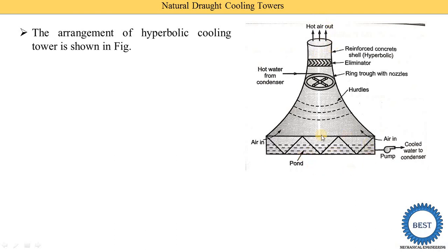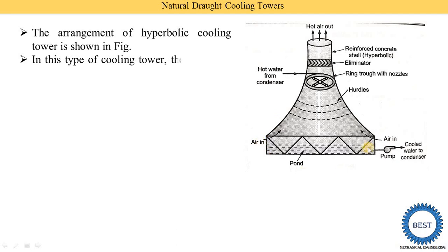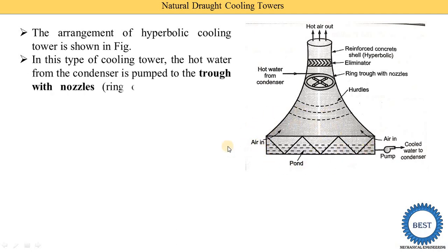The water collected at the base of the cooling tower is supplied back to the condenser using a pump. The diagonal columns support the upper construction — the hyperbolic profile rests on these diagonal-shaped columns.